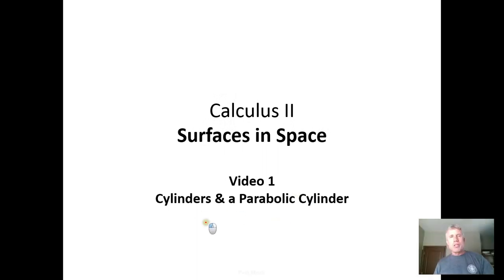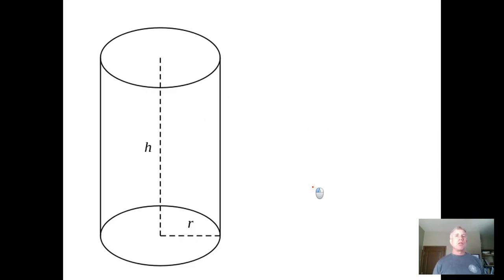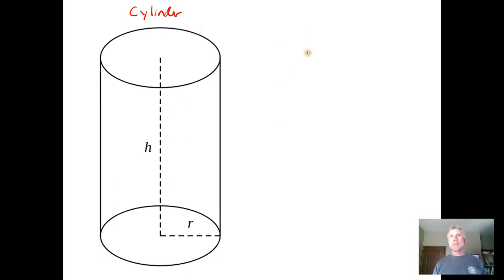In this video we're going to define a cylinder and then show an example of a parabolic cylinder. When you see the word cylinder, this is probably the picture that comes into your head — a right circular cylinder. But in calculus we're going to have a more specialized definition for cylinder.